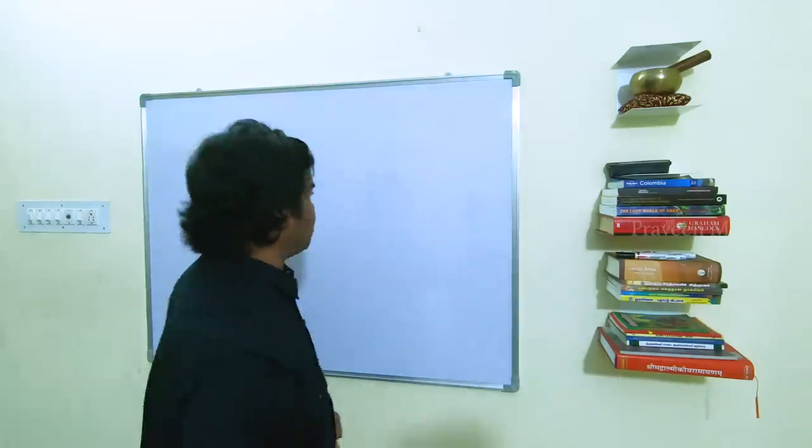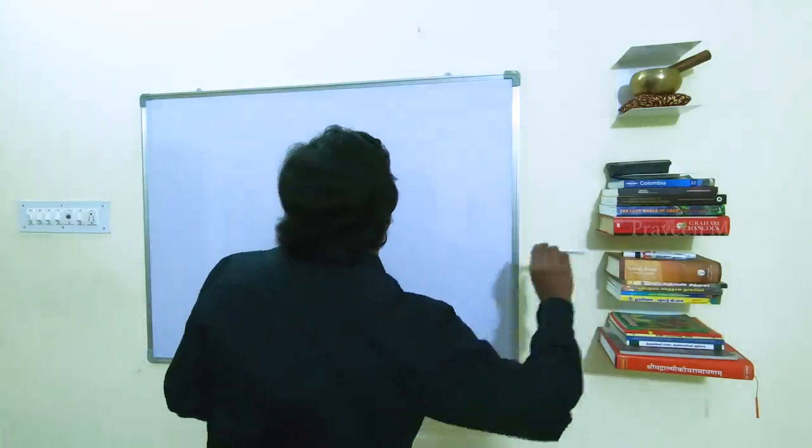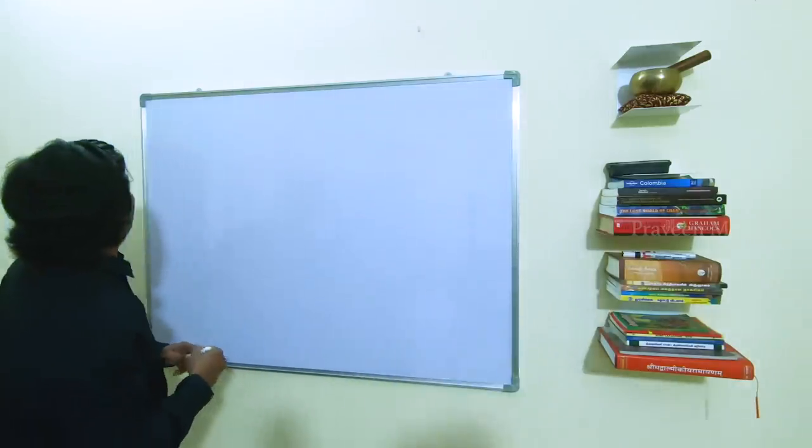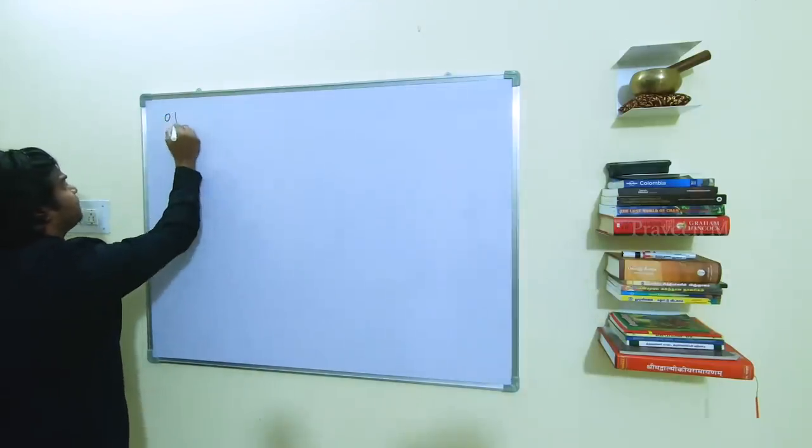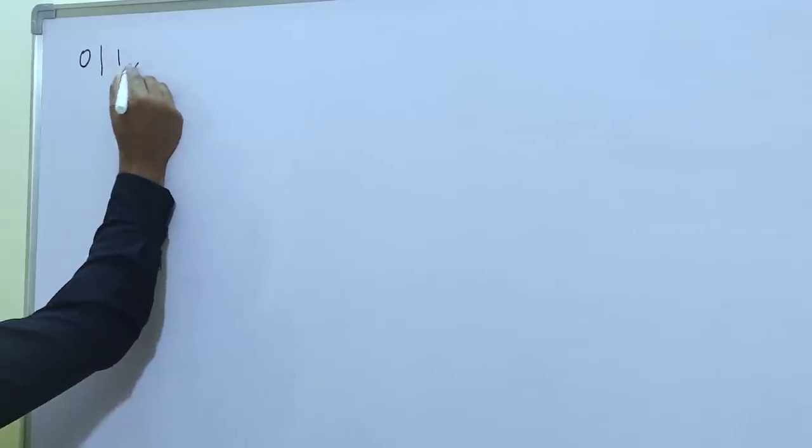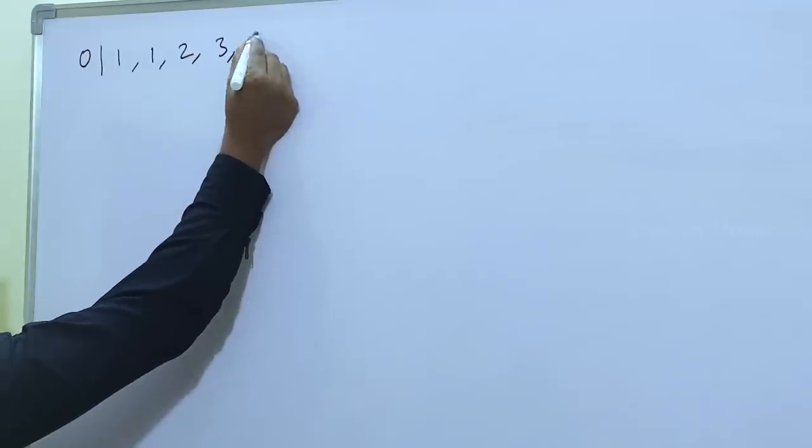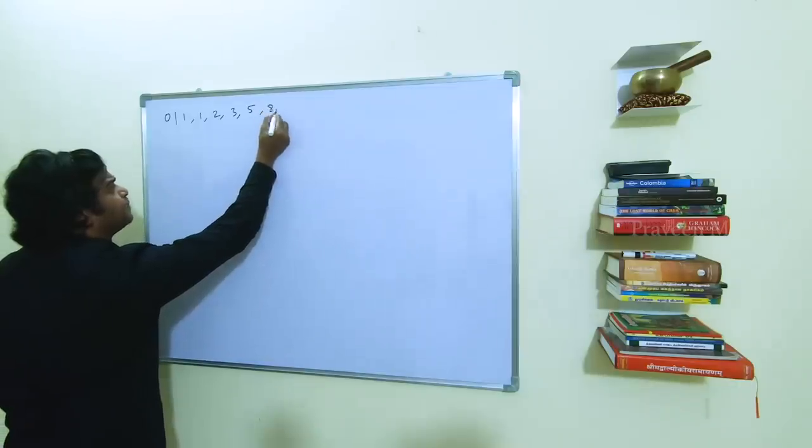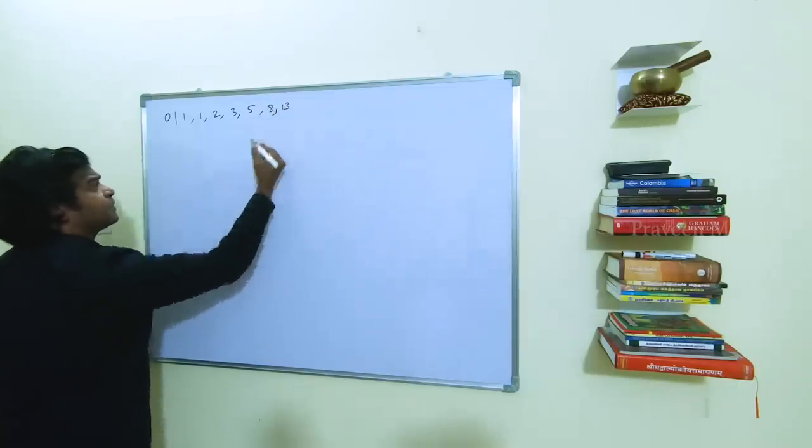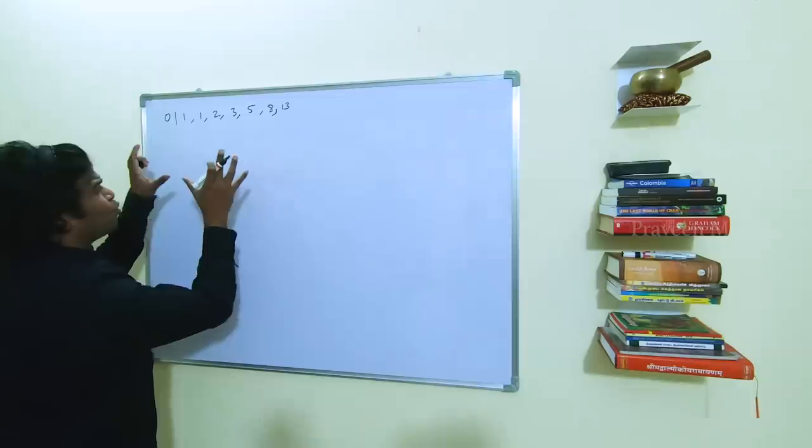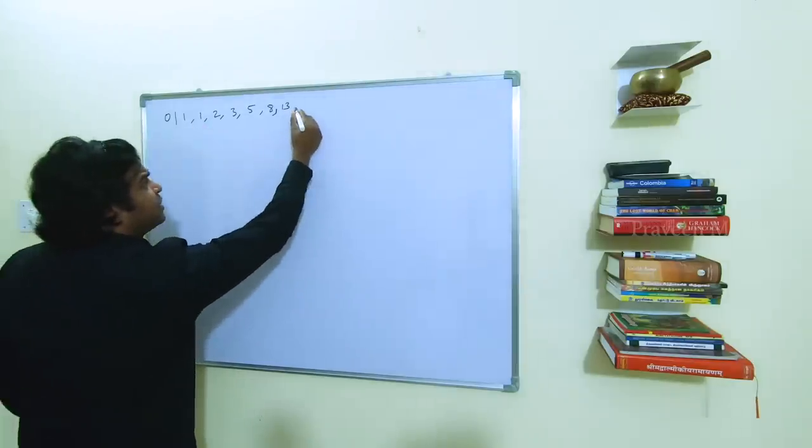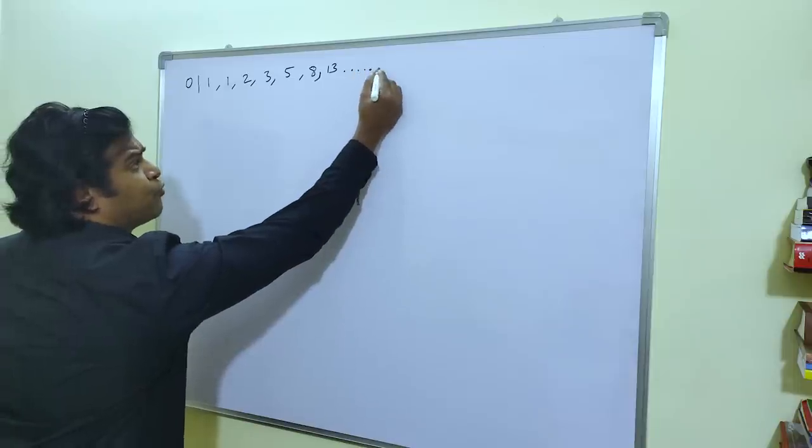First, we need to understand what is a Fibonacci number? Fibonacci number is a series of numbers like this. You may or may not include 0 and you can start 1, 1, 2, 3, 5, 8, 13. What is so special about this series and this series goes forever?